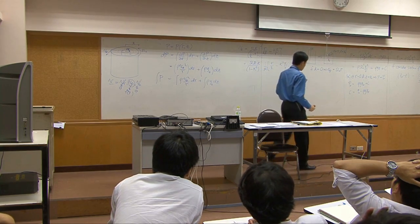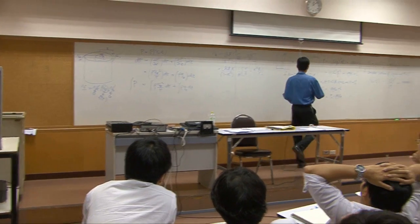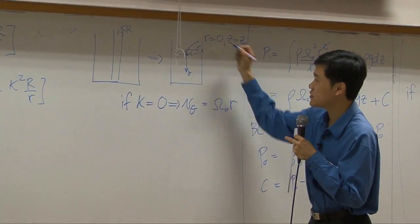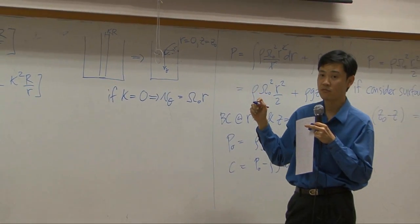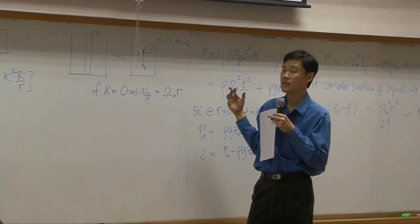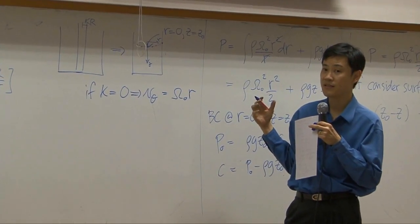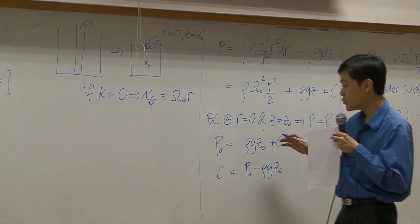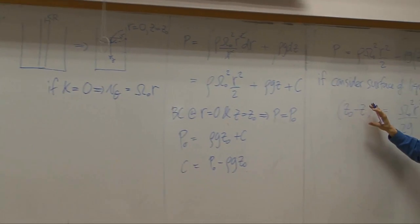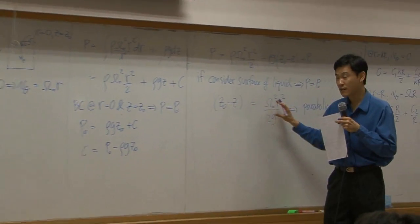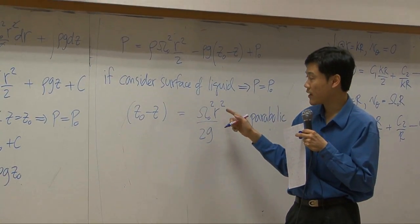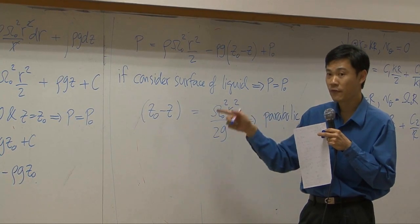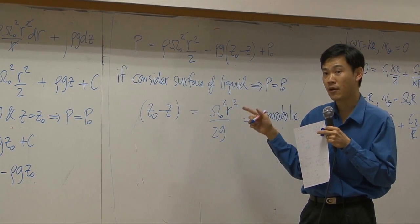Of course you can use that point as a boundary condition as well — you get the same thing. You will get a different form of equation, it looks different, but you get r squared as well, so the profile is still parabolic.